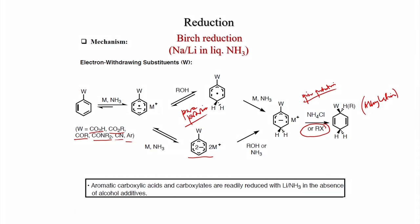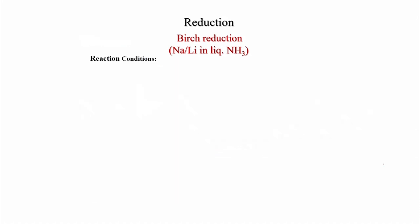Aromatic carboxylic acids and carboxylates are readily reduced with lithium in liquid ammonia in the absence of an alcohol derivative. Under these conditions the di-anion forms, then ammonia provides protonation giving the anion, and ammonium chloride completes the reduction.